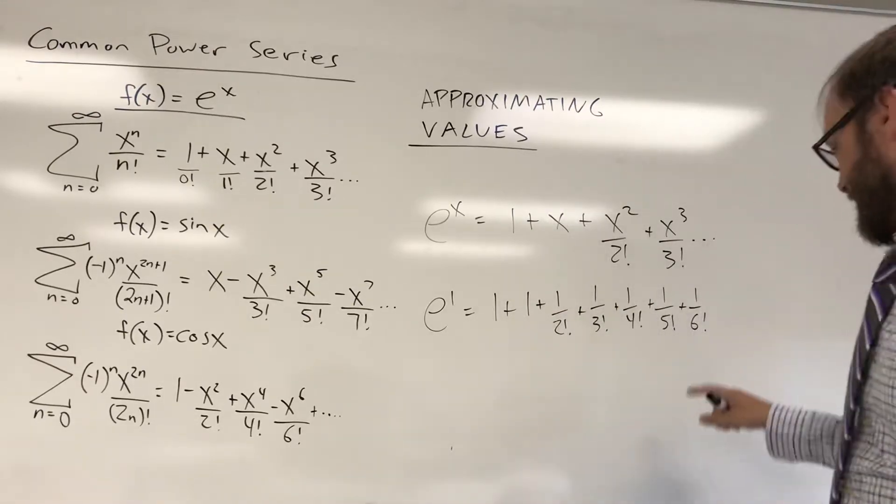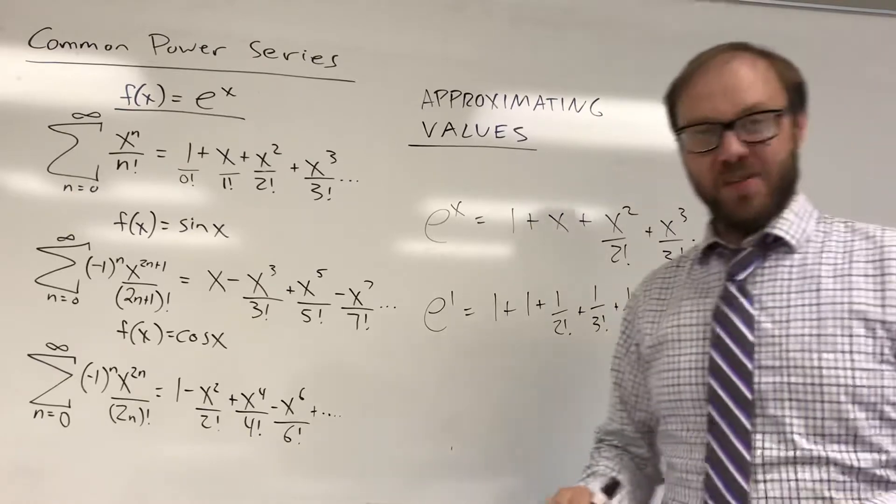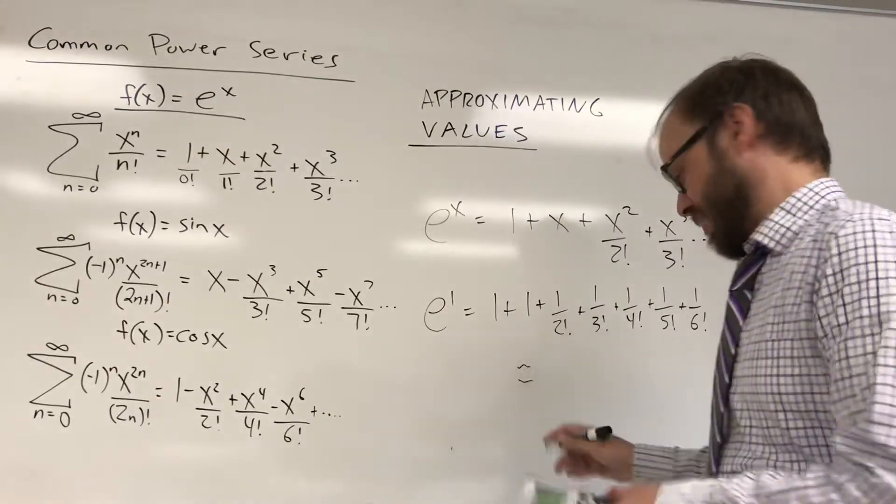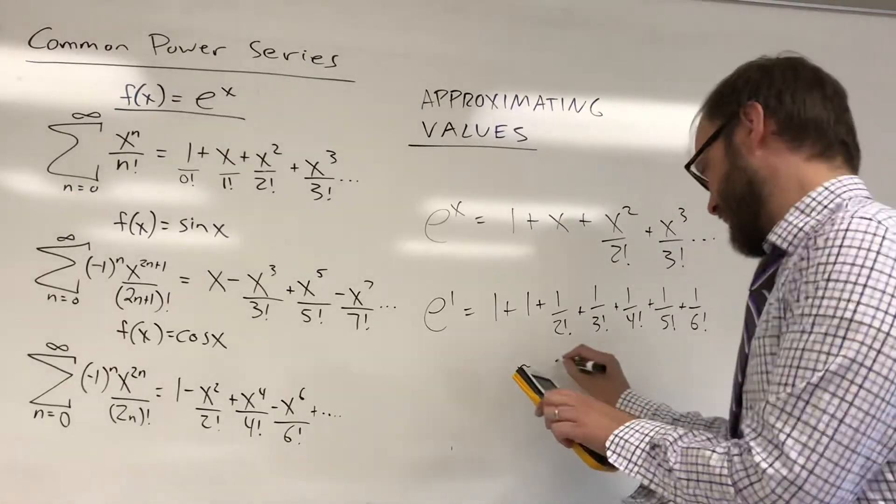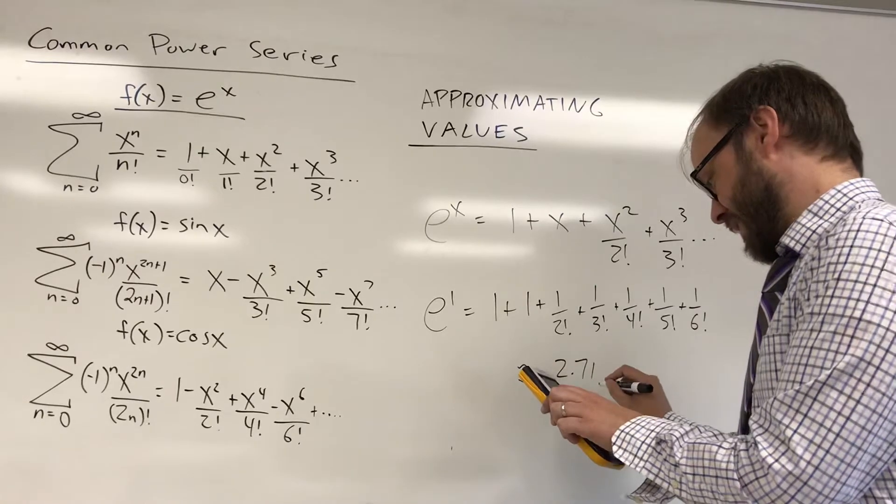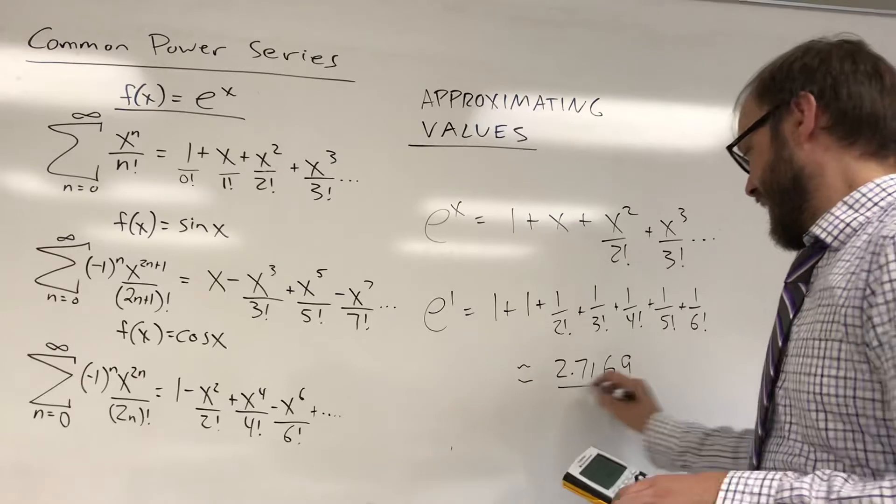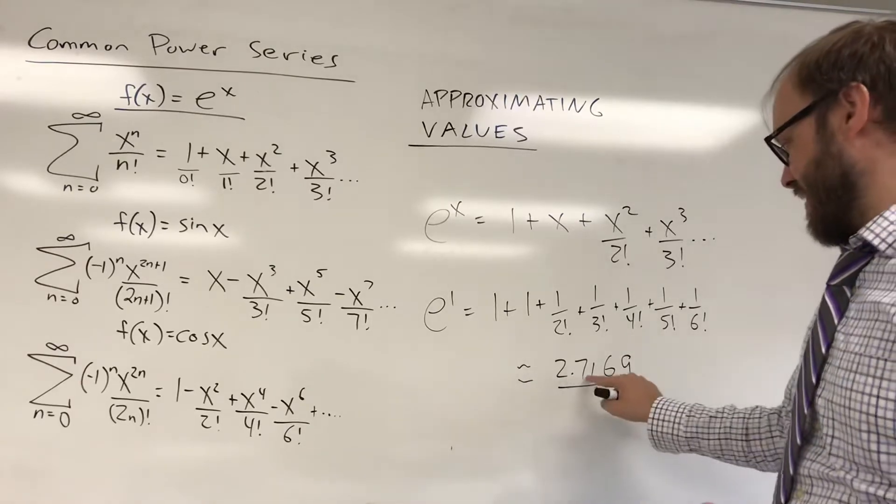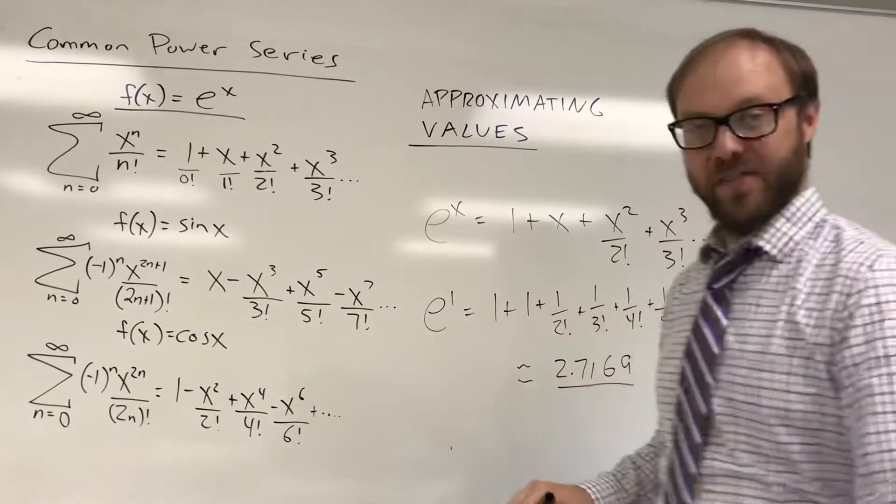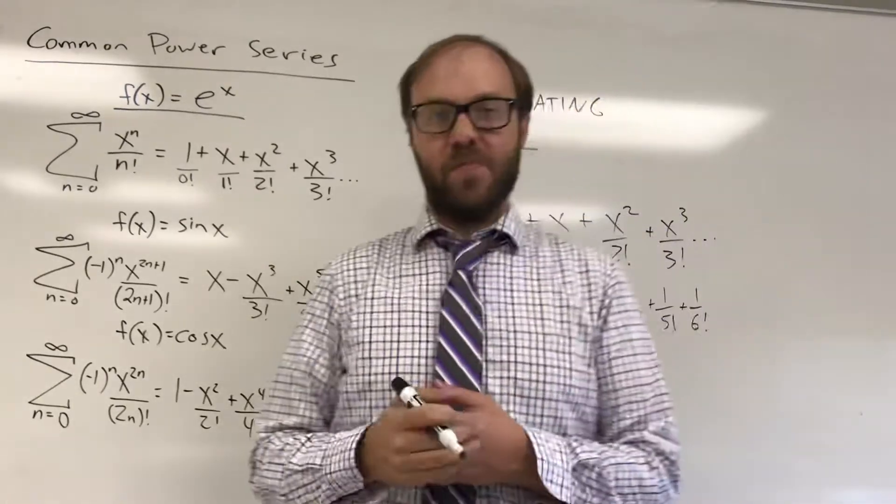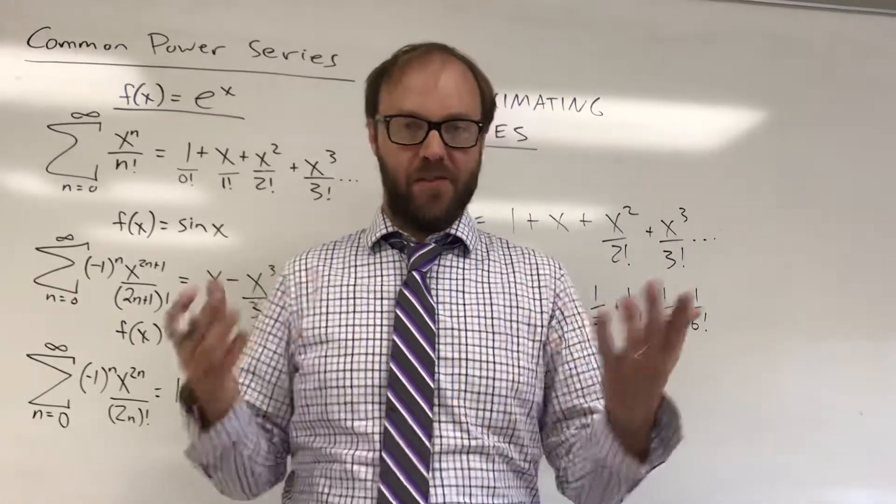So what is that? That's seven terms there, and if you calculate that you get approximately 2.7169. E is approximately 2.718. So you can see out to the hundredths place already, we have an accurate representation of e to the first power.